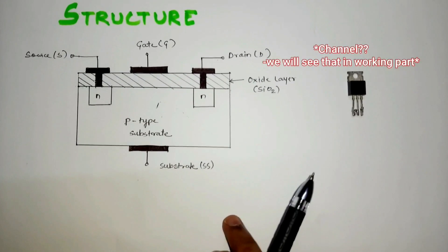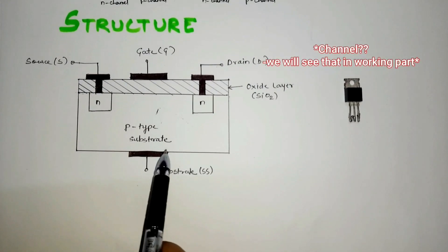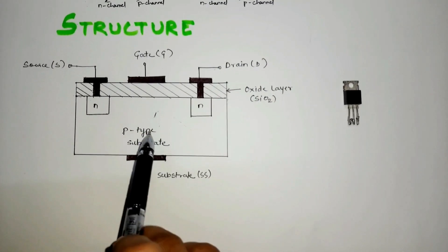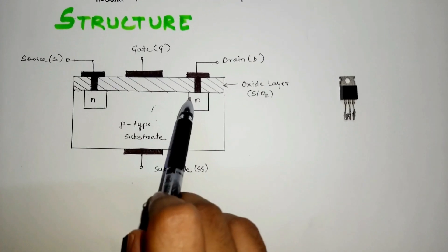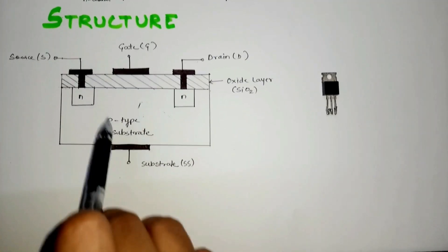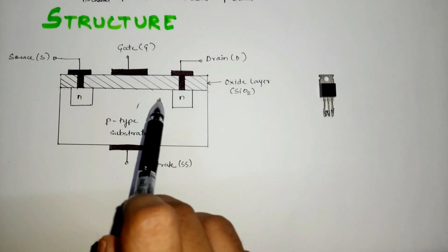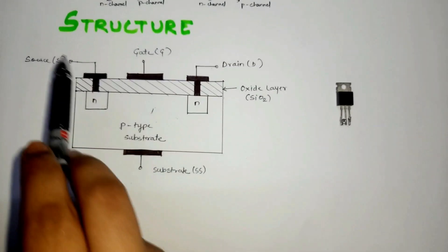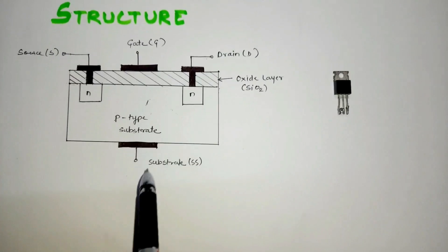Coming back to the structure, a slab of P-type semiconductor is used as a substrate and we have N-doped regions over here. These are heavily doped and this is lightly doped as compared to the N-doped regions. There are four terminals: source, gate, drain, and substrate.